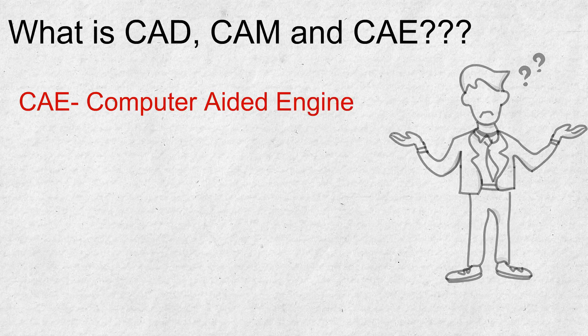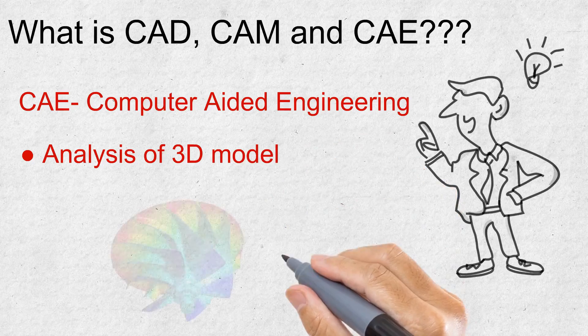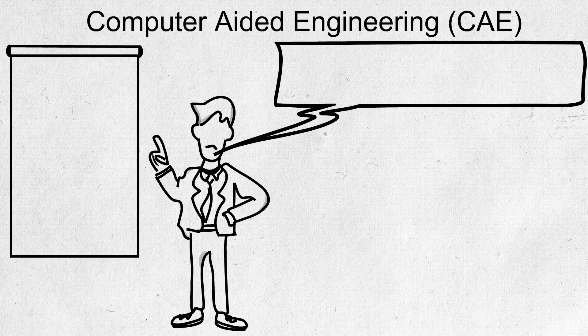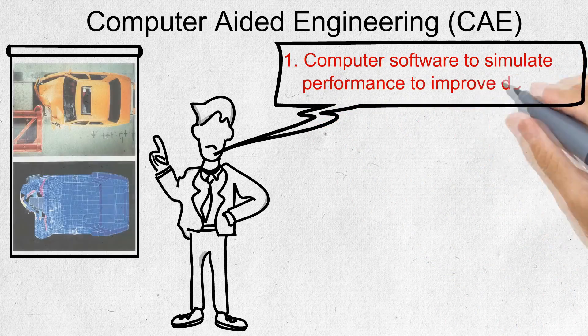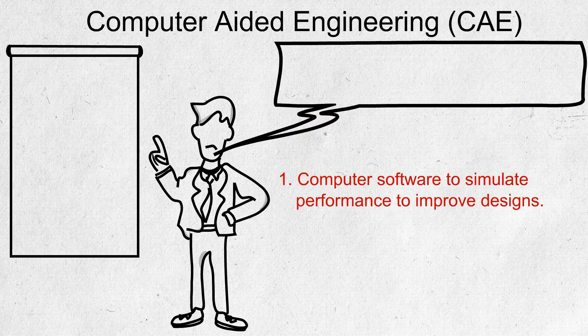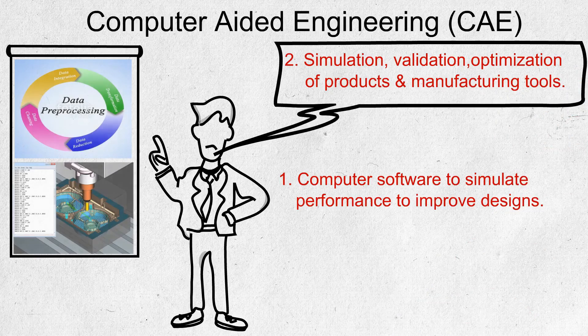Next is CAE, Computer Aided Engineering. It deals with analyzing the 3D model. CAE is computer software to simulate the performance in order to improve product designs. CAE also considers simulation, validation, and optimization of products and manufacturing tools.